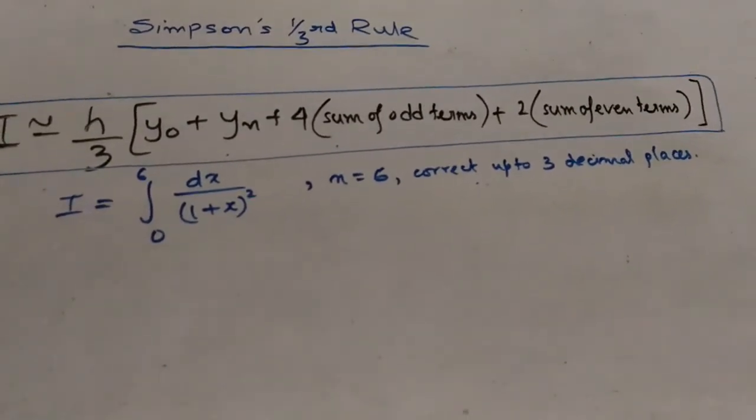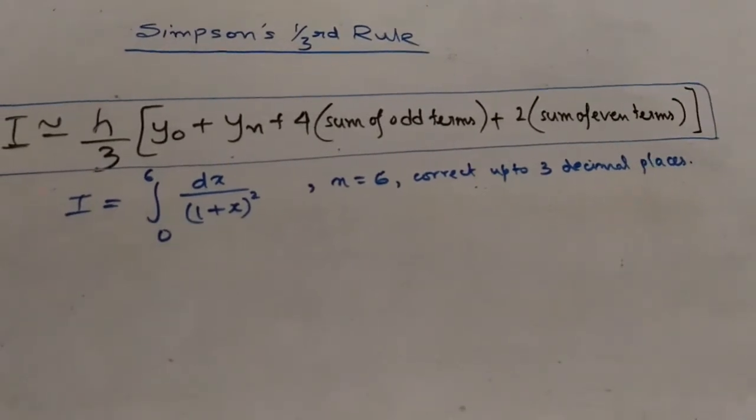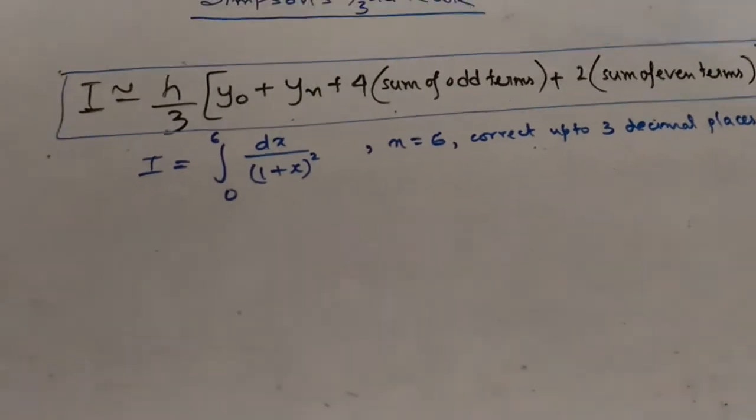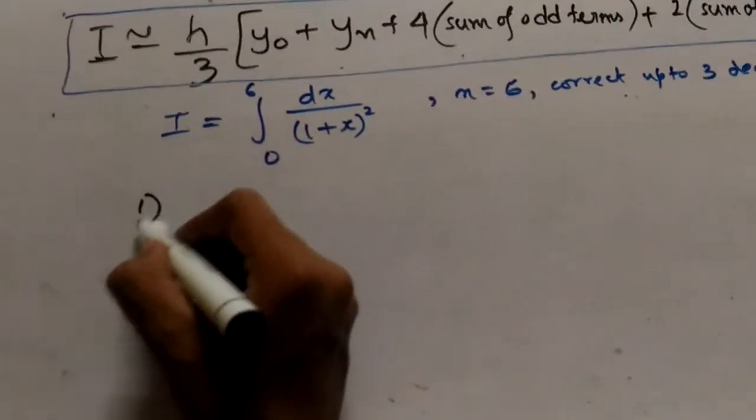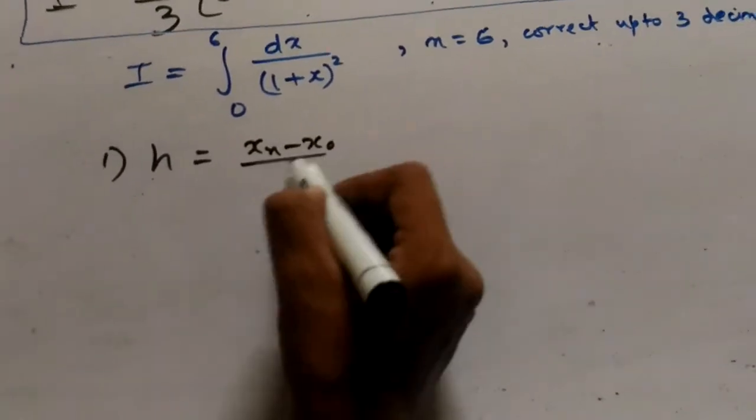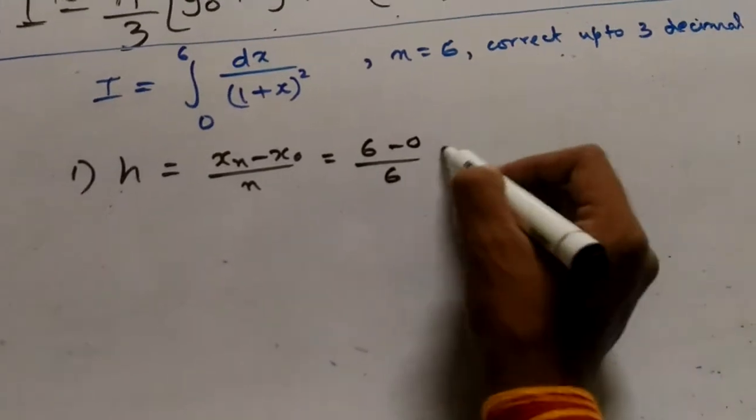Now the steps that need to be followed while solving this problem are same as that of the trapezoidal rule. First we need to calculate the value of h. So h equals (xn - x0)/n, that is (6 - 0)/6, that is 1.